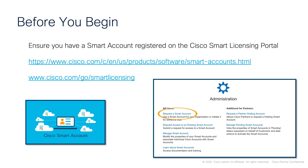Before you begin with smart licensing, you'll need to have a smart account registered on the smart licensing portal. You can use the links shown on screen. The first link takes you through how to get your smart accounts and gives a bit more overview of what they're about. The second link takes you straight to the smart licensing portal, where you can either log in and start to manage your licenses or request accounts.